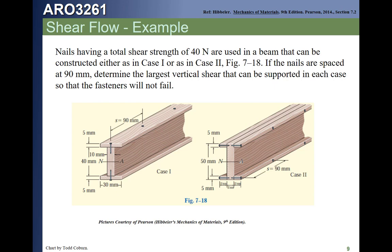This example looks like we have two parts with the exact same dimensions, but they're attached together differently. In the left case, our Q feeding the nail is going to be that 0.03 meter by 0.05 meter segment, and in the right case, the Q feeding the nails will be that 0.05 meter times 0.01 meter area. The Y bar for both of those is the same. The V is the same, and the I of the total section is the same.